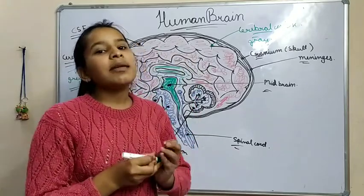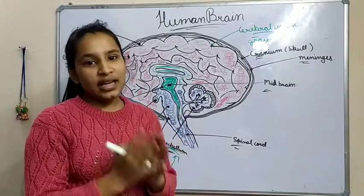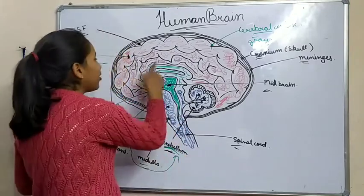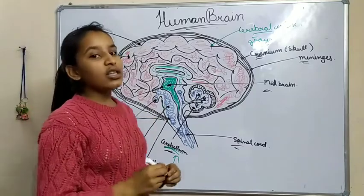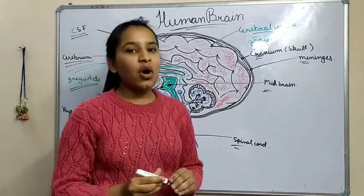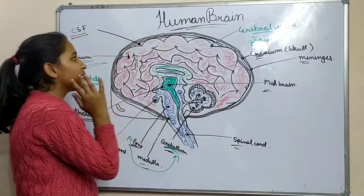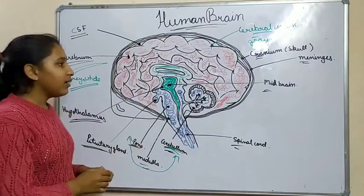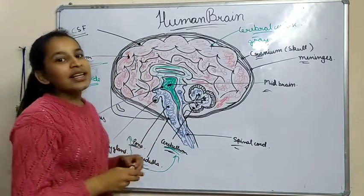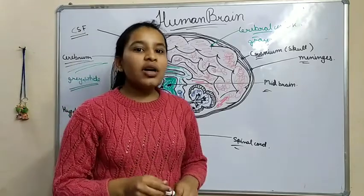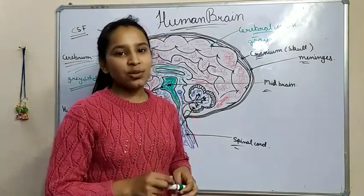We have discussed all three parts of the human brain and all their sub-parts. In the next video we will see hormones in plants. Thank you.